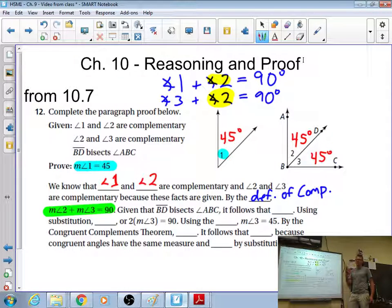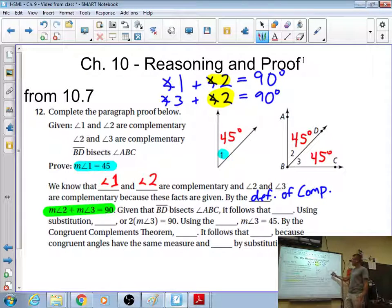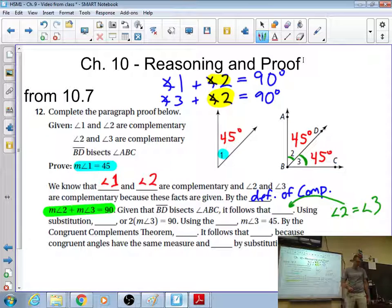Then, given that BD, oh, I forgot the other given. BD bisects ABC. You don't even need that given, but they're being really nice to you. So, since BD bisects, what does bisect mean? Yeah, bi means two. Sect means half. So, we're going to bisect things. We have two equal-sized angles. So, we already, actually, before we determined that these are 45, we see that this is the same as this. They're equal-sized.